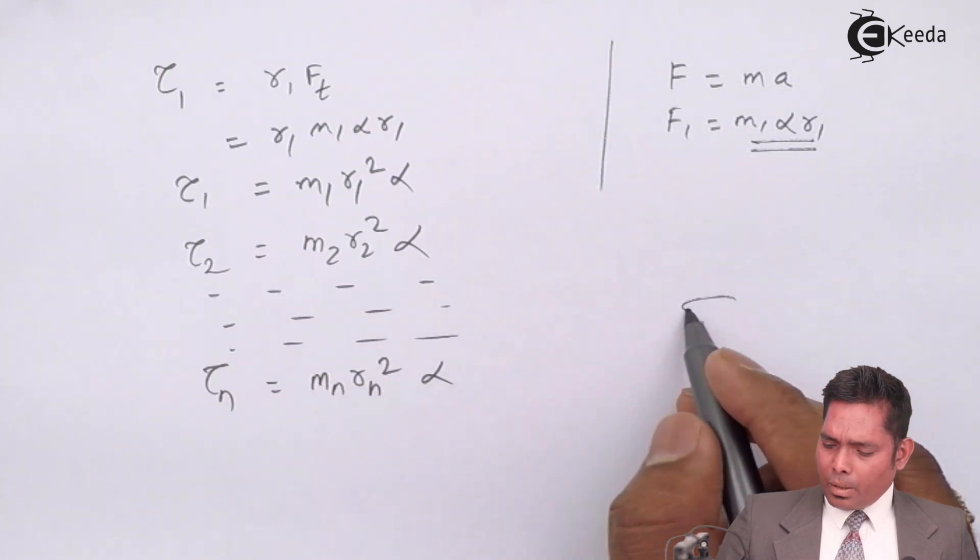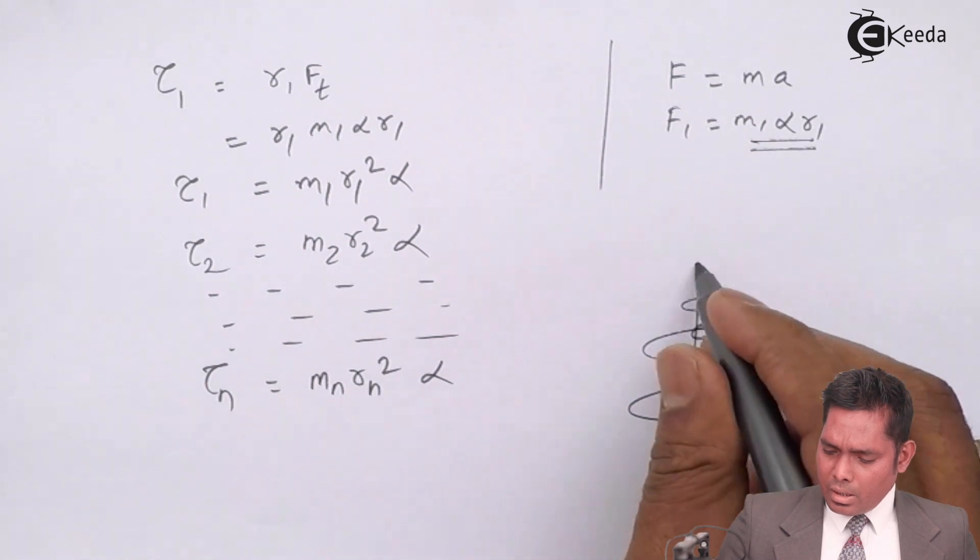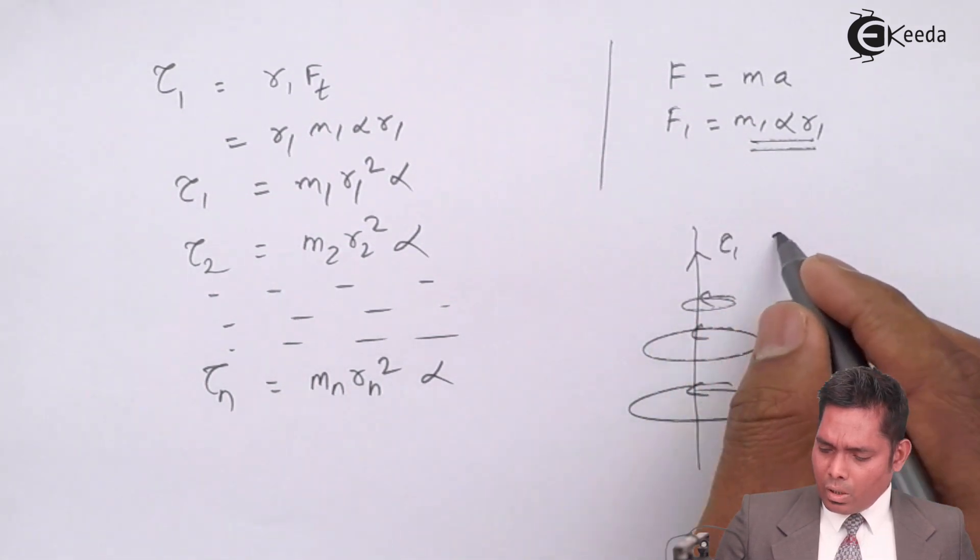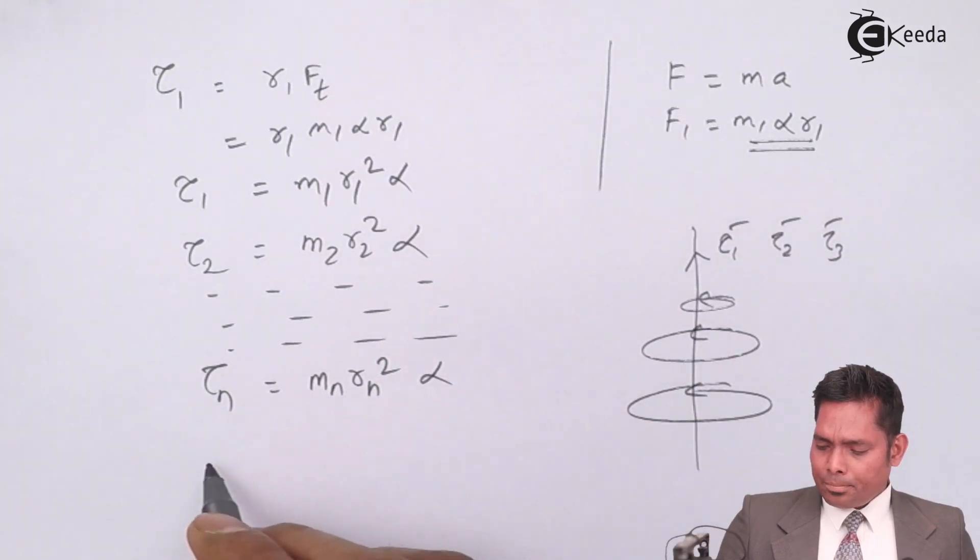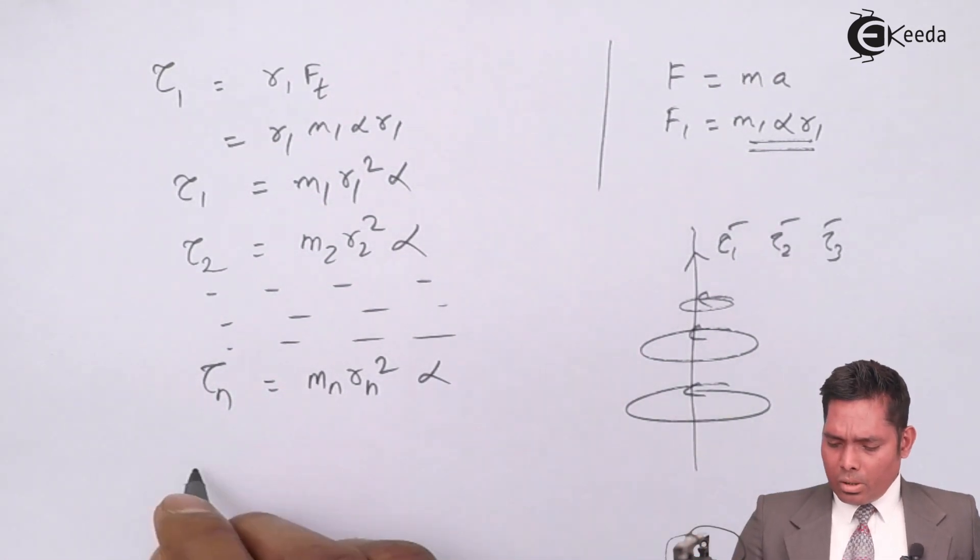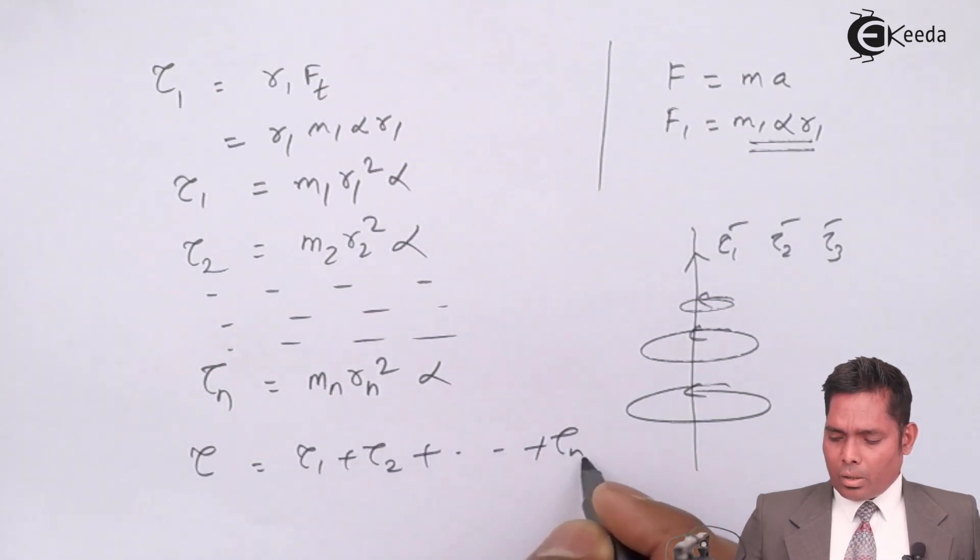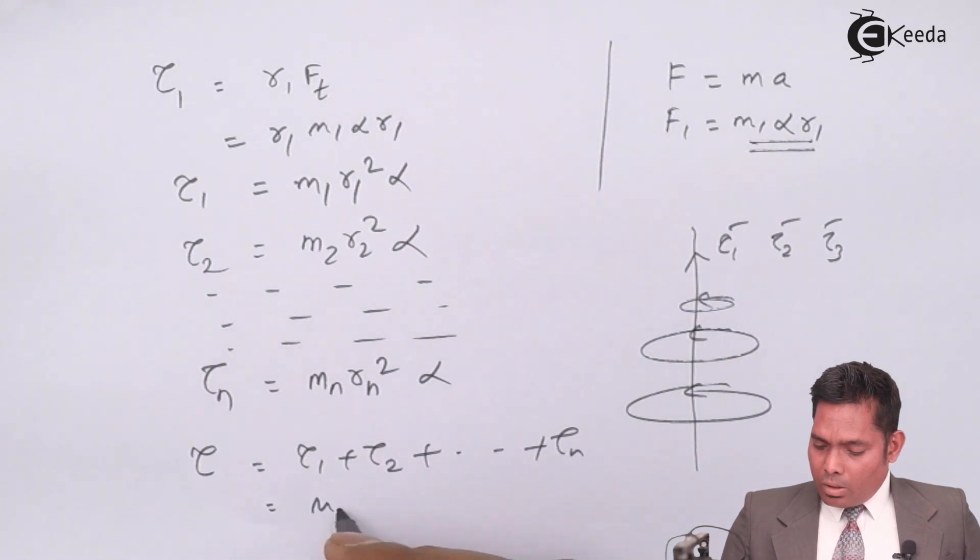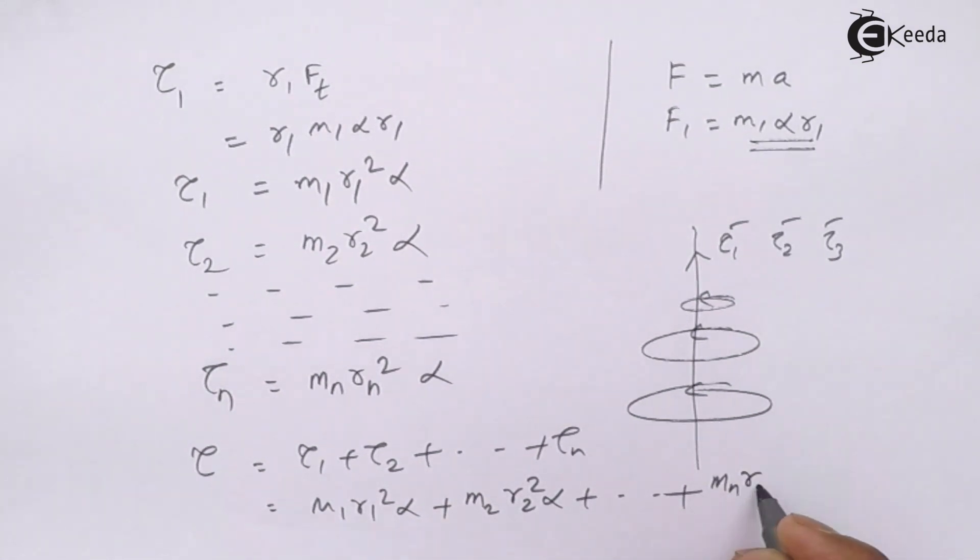Because all the particles are rotating in a particular sense, there exists the torque direction tau 1, tau 2 all will be in the same direction. So they will be added just like a scalar quantity because the direction is same. The total torque due to a rigid body equals to the sum of the individual torques that is acting on the body. This is m1 r1 square alpha, this is m2 r2 square alpha, plus and so on and mn rn square alpha.